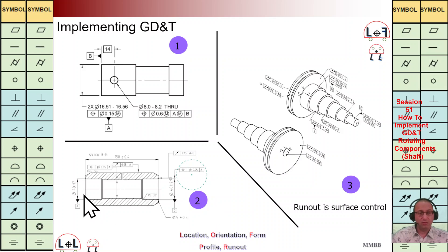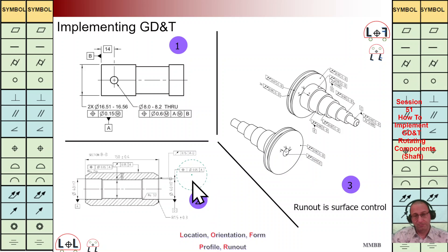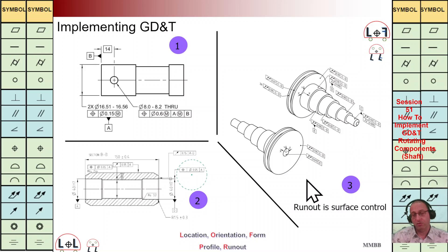Method number two: we are going to have axis A here, as we can see at bottom left, and axis D here. We can use this positioning control to make coaxiality between D and A. At the right hand side we are going to see reference axis C and reference axis D. We are going to have this total runout 0.02 CD axis. In this manner we connect these two axes to each other. But with runout, we are going to control the surface — we cannot use any modifier.